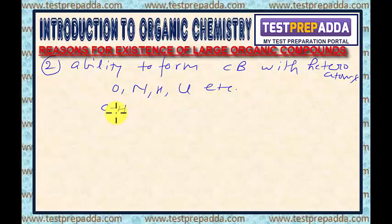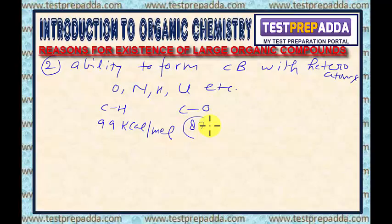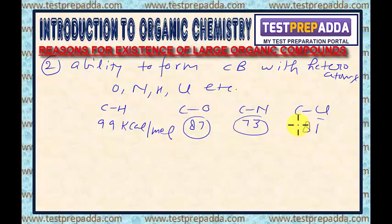This can be explained with the help of data. The bond energy of C–H is 99 kilocalories per mole. The bond energy of C–O is 87 kilocalories per mole. The bond energy of C–N is 73 kilocalories per mole. The bond energy of C–Cl is 81 kilocalories per mole. On the basis of this data, we can say that carbon has the ability to form strong covalent bonds.